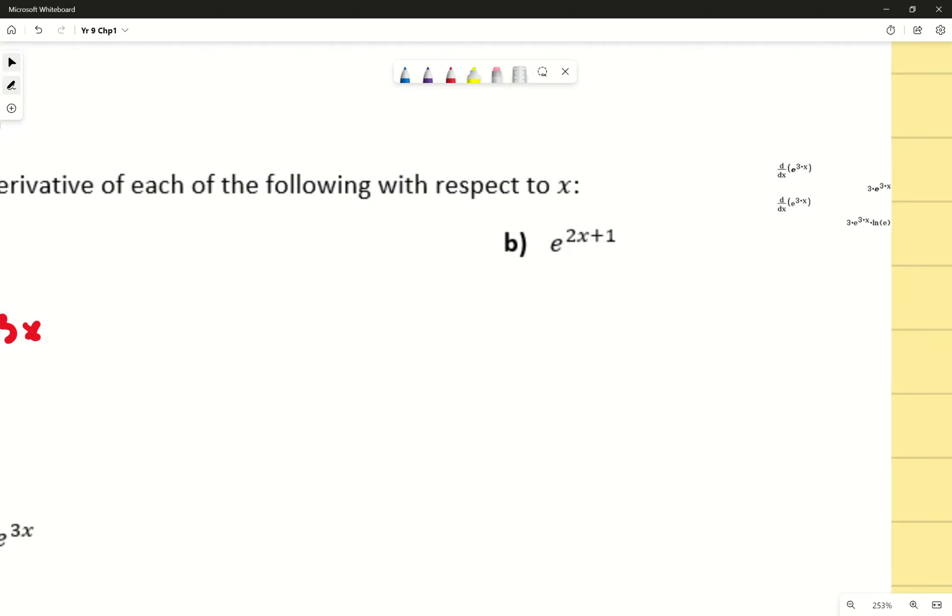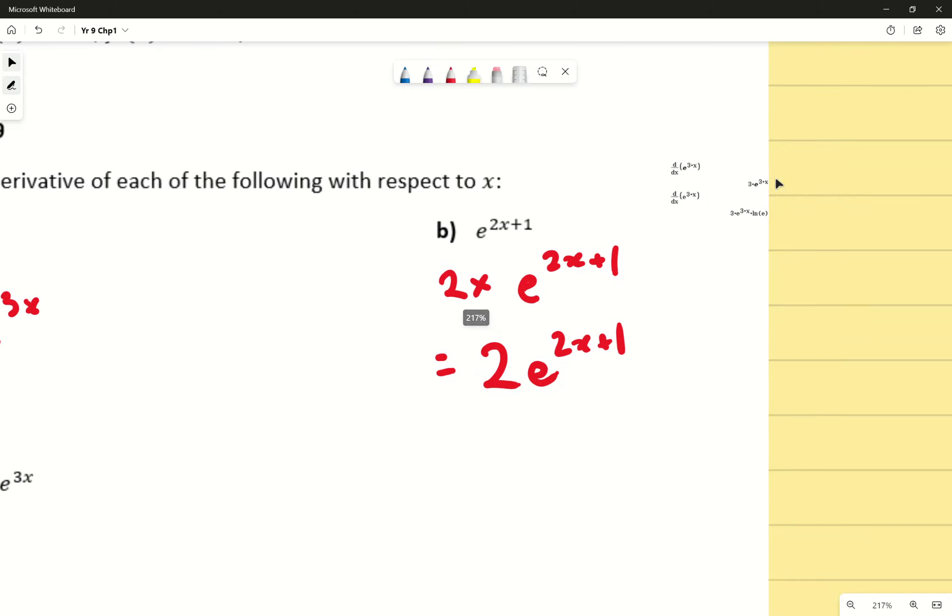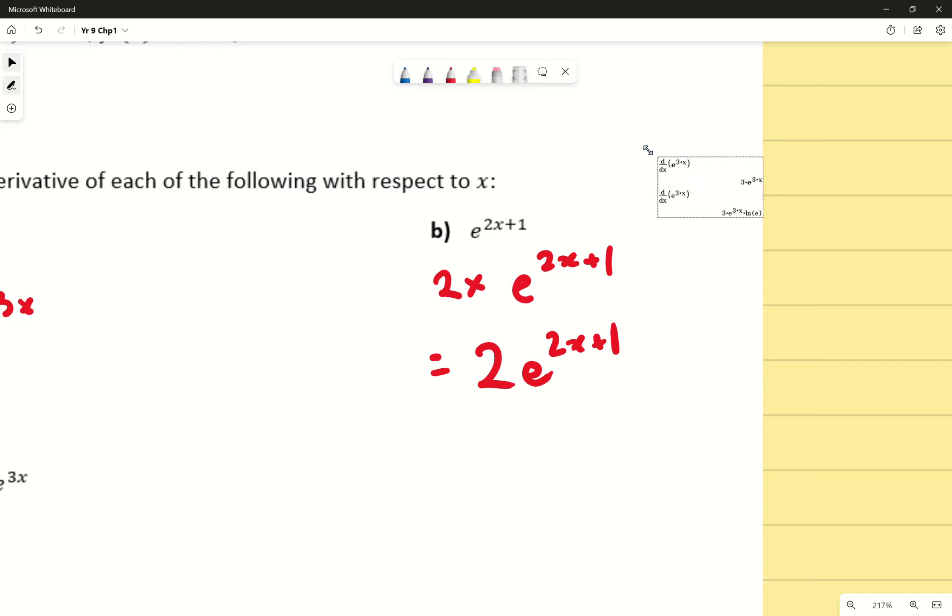Moving on to the second component, we get e to the power of 2x plus 1. The same general principle applies. We derive the top of the power, and that becomes 2. And we go 2 times e to the power of 2x plus 1, or we can just write 2e to the power of 2x plus 1. One more thing to note while you're working through this, if you're double checking on your calculator, you might see something like this.